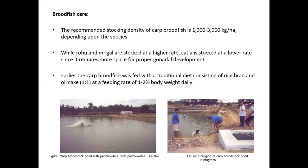For broodfish care, the recommended stocking density of carp broodfish is 1000 to 3000 kg per hectare, depending upon the fish species. Rohu and Mrigal are stocked at higher density. All these — Rohu, Mrigal, and Catla — are Indian major carps. We can stock a higher number of Rohu and Mrigal per hectare as compared to Catla, because Catla requires more space for proper gonadal development.